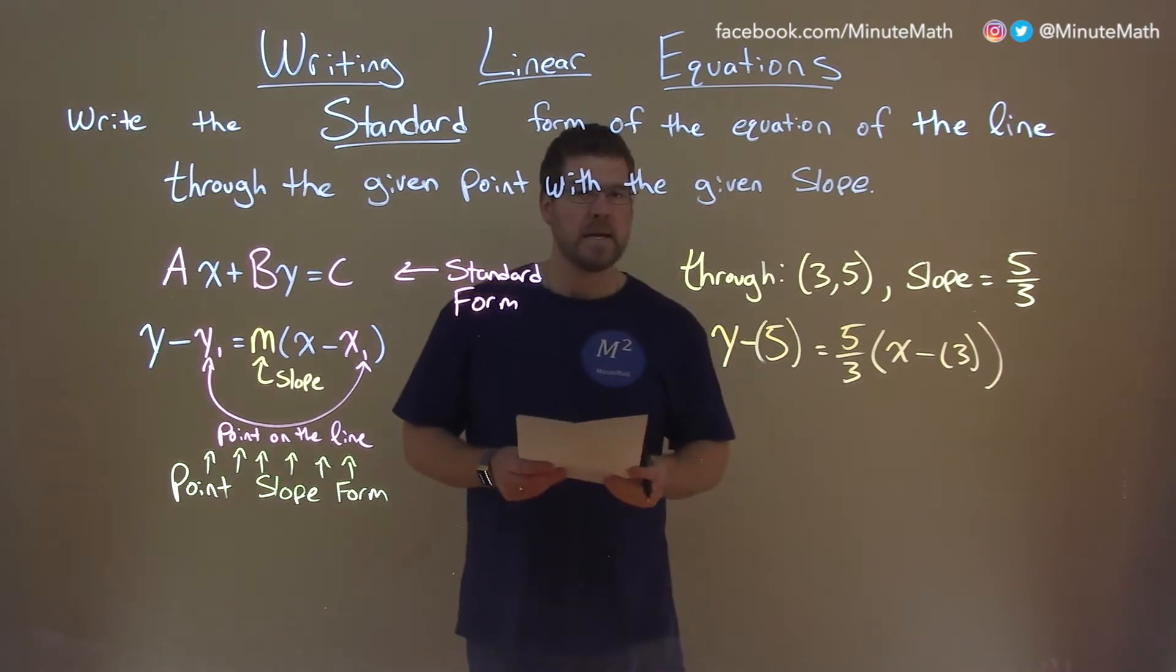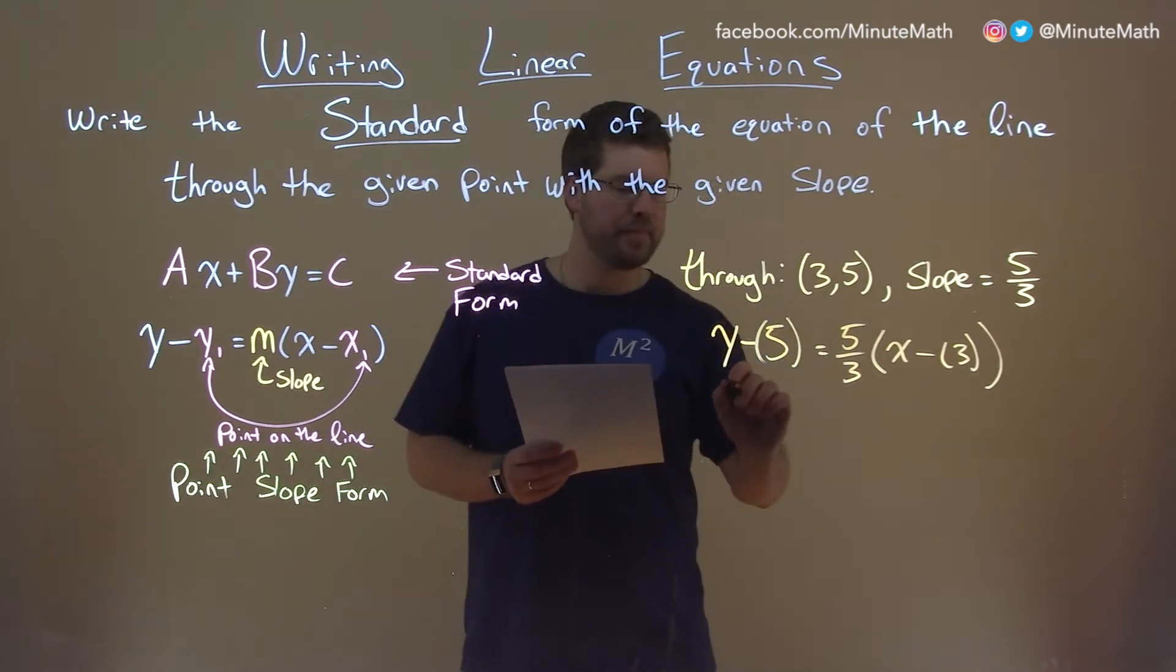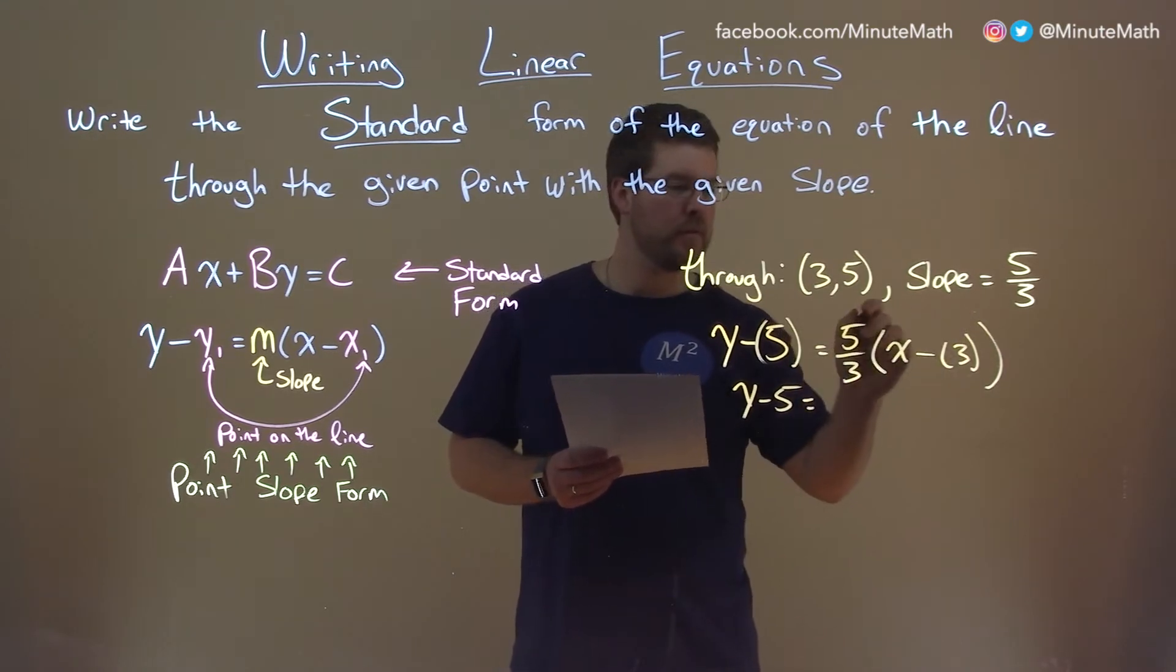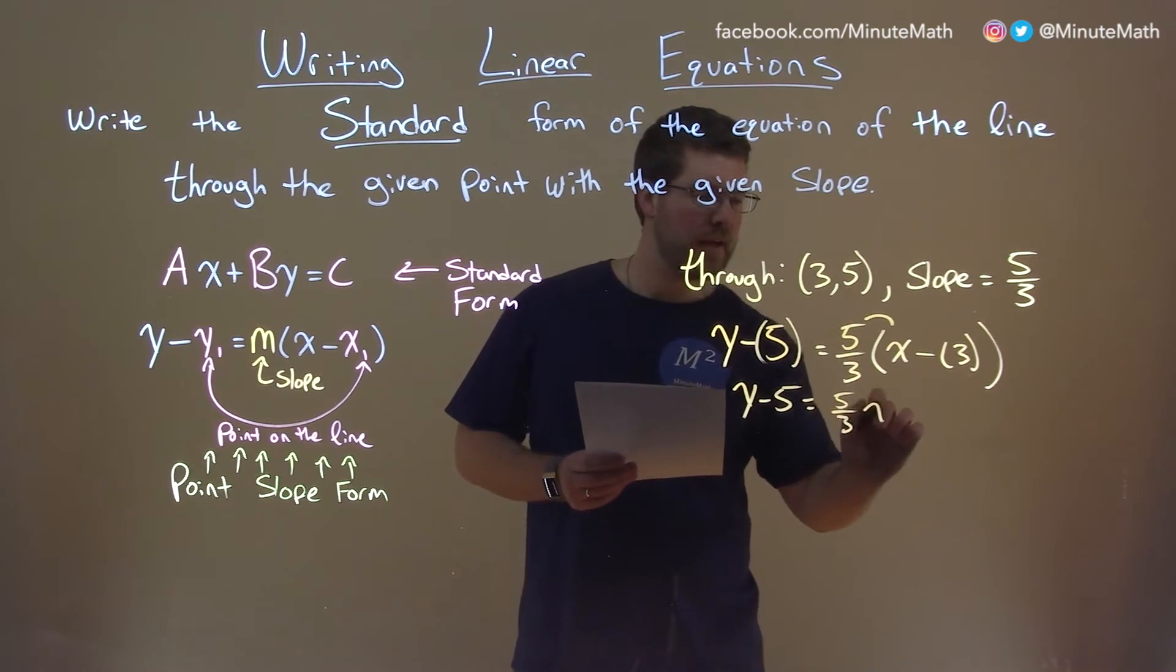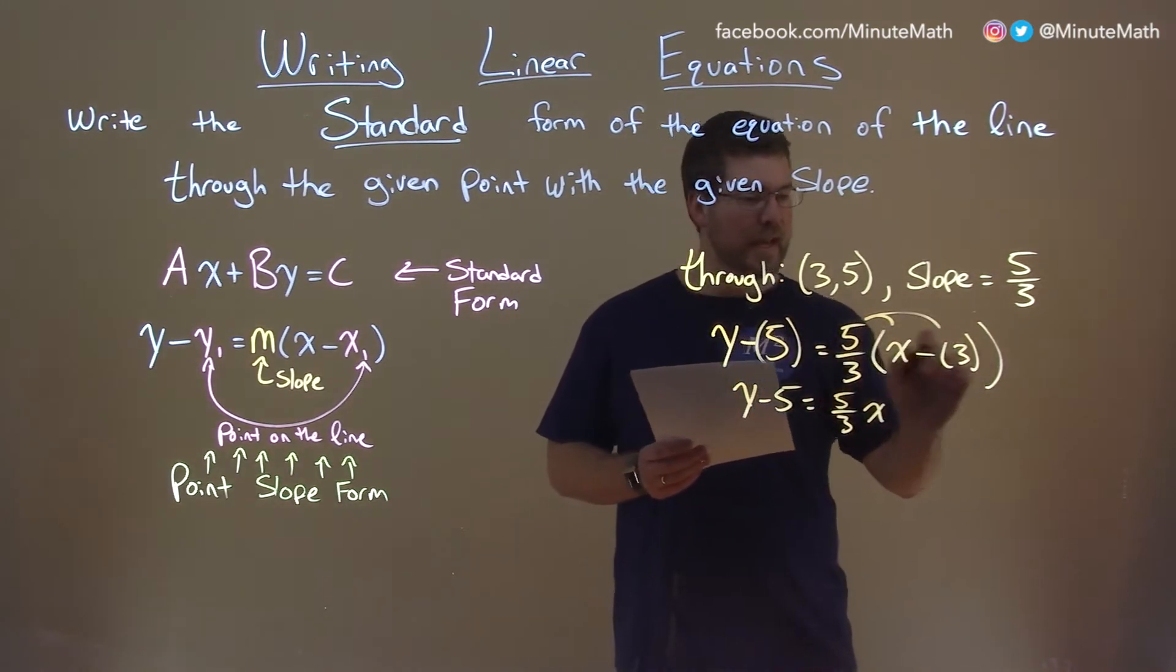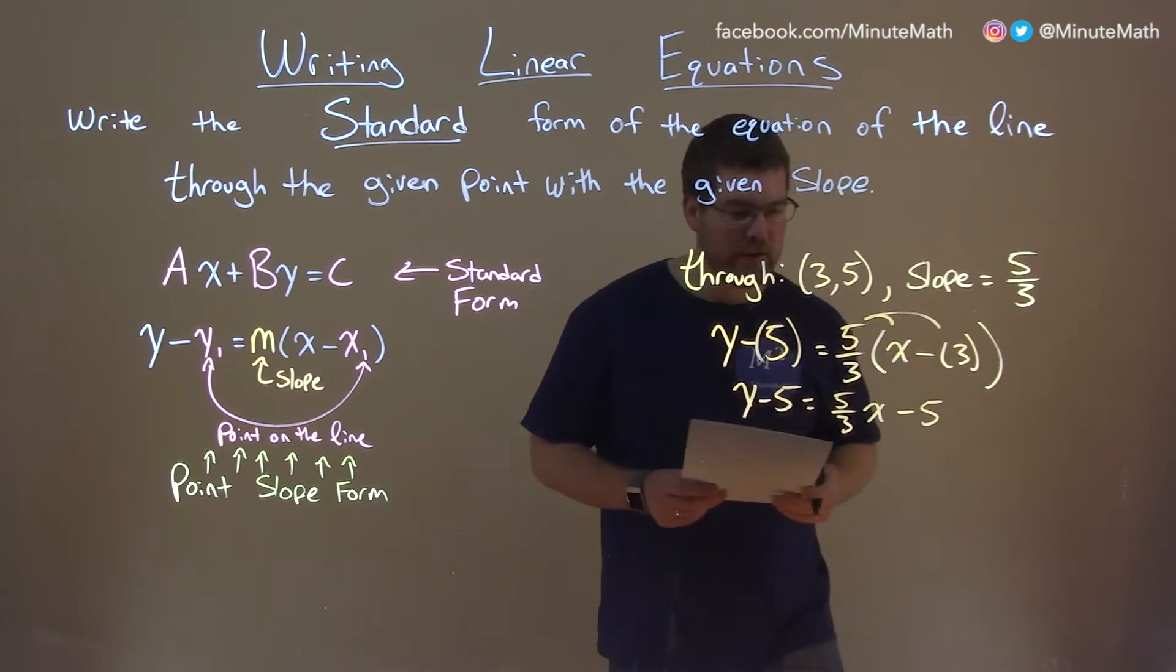Okay, now let's simplify this where we can. y minus 5 here equals, distribute the 5 thirds to both parts. 5 thirds times x is 5 thirds x, and then 5 thirds times minus 3. The 3s cancel, and we're left with just a minus 5 here.